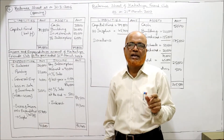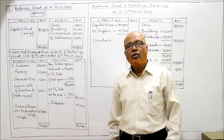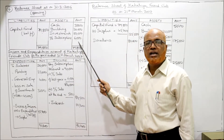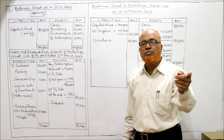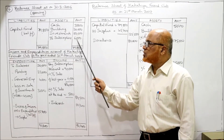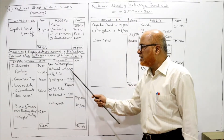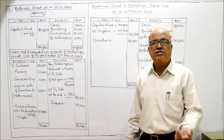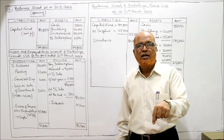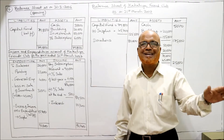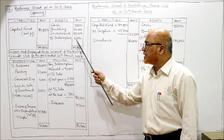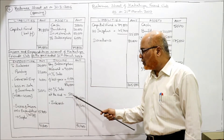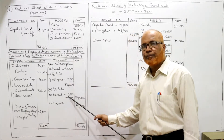Subscription received is 90,000. Last year's outstanding subscription was 6,000 — we assume this was received during the current year, so we subtract it. Rule: current year outstanding subscription is added, last year's outstanding subscription is subtracted. So 90,000 minus 6,000 equals 84,000, plus current year outstanding 500, gives subscription income of 84,500. Next, interest income is 10,200.